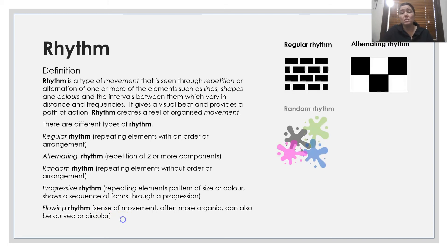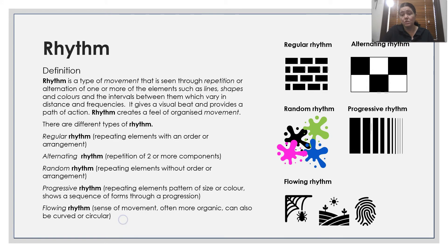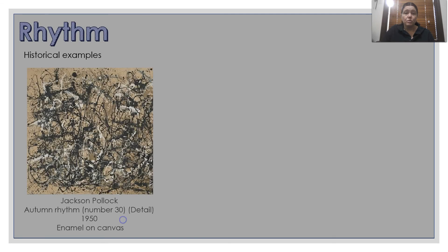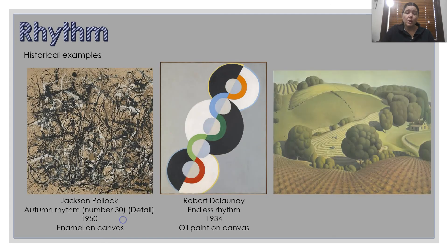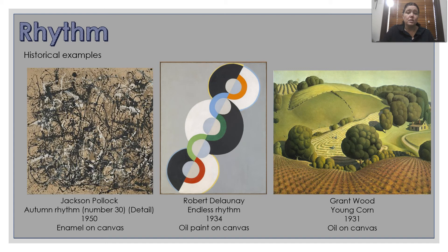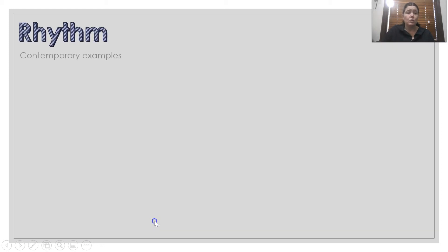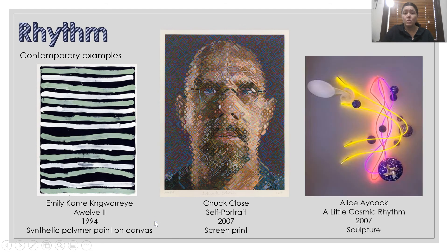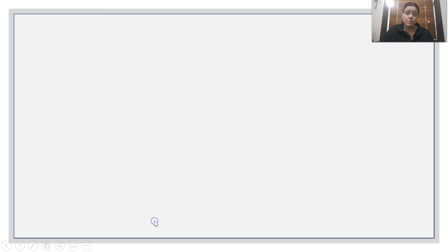You can see the different types of rhythm shown in these examples. Some historical examples of rhythm showing it in different ways — you could argue we've got some flowing rhythm, some alternative rhythm. And we've got some contemporary examples of rhythm showing it in different ways.